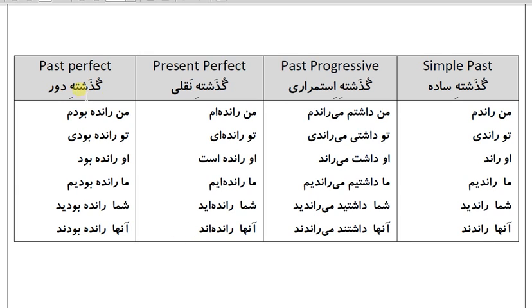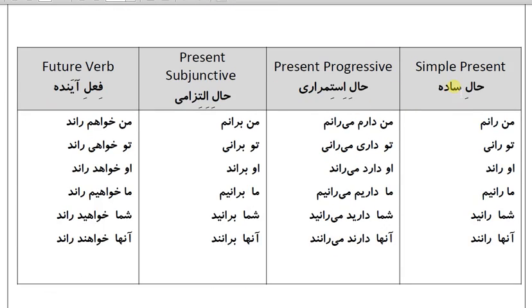Past perfect — گذشته دور: Man ranadhe budem, To ranadhe boudi, O ranadhe boud, Ma ranadhe boudim, Shoma ranadhe boudid, Anha ranadhe boudend. حال ساده (simple present): من رانم، تو رانی، او راند، ما رانیم، شما رانید، آنها رانند.